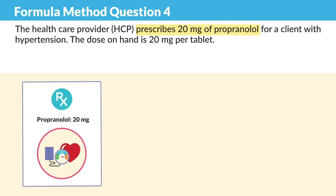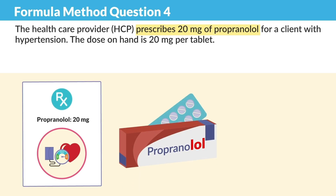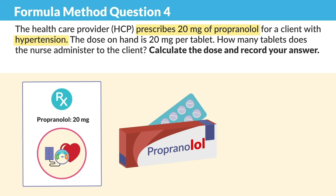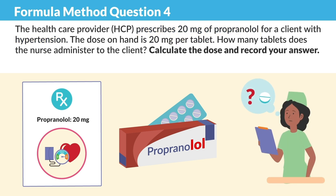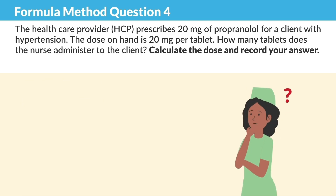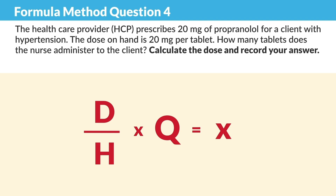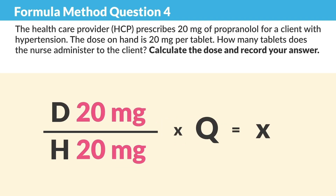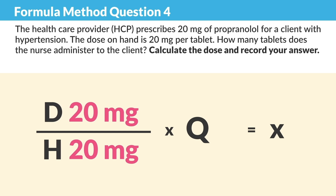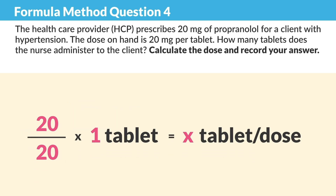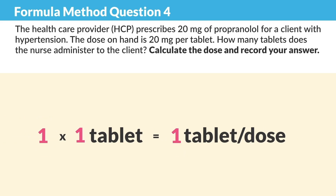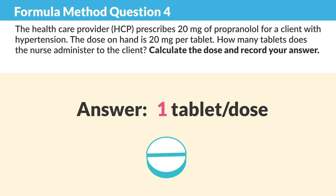Question number four: the healthcare provider prescribes 20 milligrams of propranolol — a beta blocker — for a client with hypertension. The dose on hand is 20 milligrams per tablet. How many tablets does a nurse administer? Let's break it down using D over H times Q. D is the doctor's order: 20 milligrams. H is what we have on hand: 20 milligrams. Q is one tablet. So 20 over 20 times one — the correct answer is one tablet per dose.